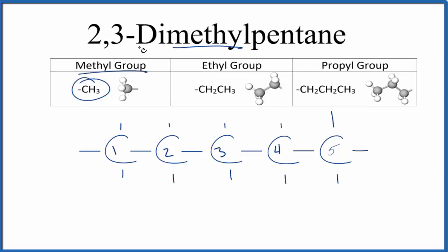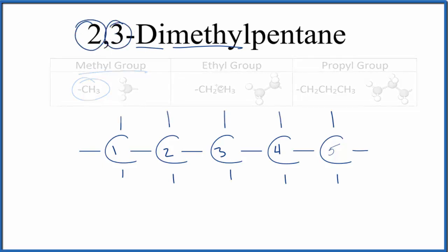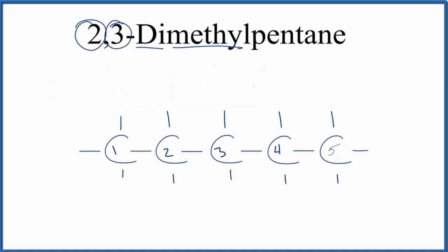We're going to put them on - we have di, we have two of them, one on the second carbon and the other on the third carbon. So here's our second carbon. Let's put a methyl group there and one on the third carbon down here. This is the structure for 2,3-dimethylpentane.